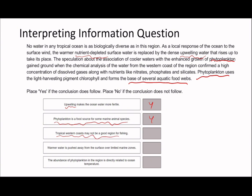We've finished the passage now, so for the remaining statements we're relying on memory. Third statement: 'Tropical western coast may not be a good region for fishing.' I remember seeing something relevant. Reading around that sentence: chemical analysis from the western coast confirmed a high concentration of dissolved gases along with nutrients, and there's enhanced growth of phytoplankton — which we know forms the base of several aquatic food webs. So overall I would say no for this, because it's probably likely to be a good region for fishing — you've got a lot of prey that other fish can eat, as well as good nutrients and gases.